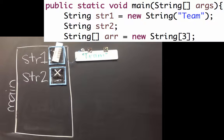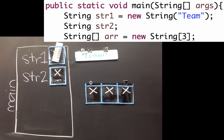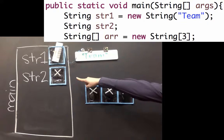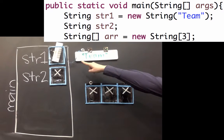If we make a string array with length 3, that creates three variables that can each hold a reference to a string. They look a lot like str1 and str2 variables over there.